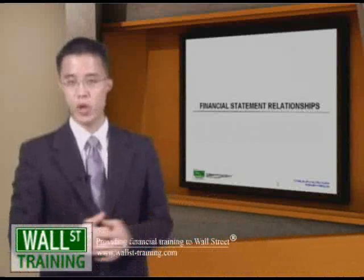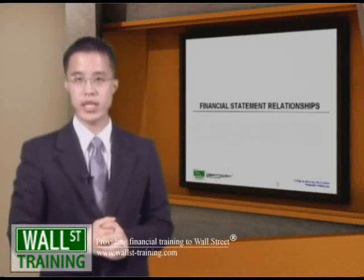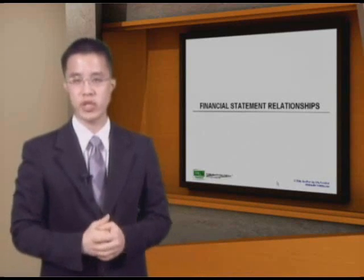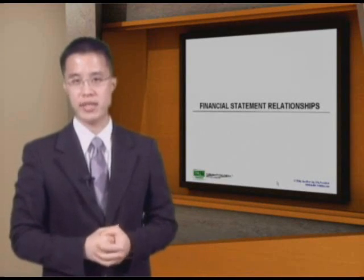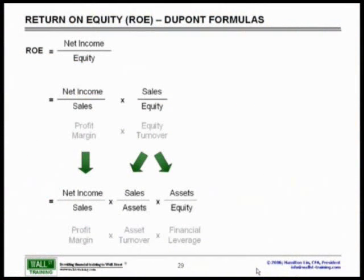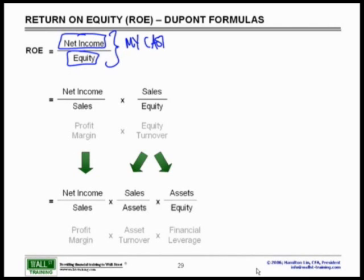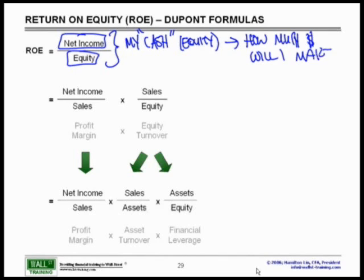Welcome back to accounting part two: financial statement integration as well as a basic overview of the major accounting ratios. We'll go into a little more precision on our ROE — return on equity. As you may recall from the previous slide, return on equity simply says take your net income divided by equity, telling us how much profit we are able to extract for the equity put into this firm.